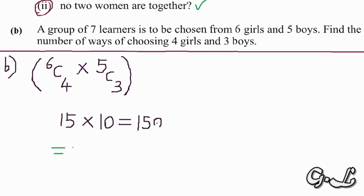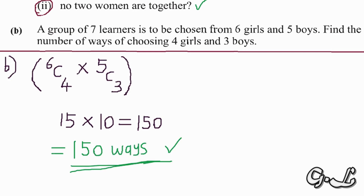Therefore, there are 150 ways of choosing four girls and three boys. This is how you score marks in an exam room. I hope you're clear — if you have any questions, feel free to drop them in the comment section. Don't forget to subscribe, like, share, and comment. Thank you for watching — see you in another video tutorial.